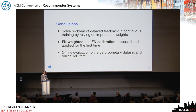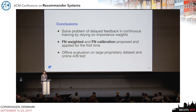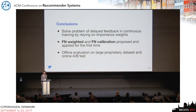To conclude, we solved the problem of delayed feedback in a continuous training framework by relying on importance sampling and importance weights. We proposed and applied for the first time fake-negative weighted loss and fake-negative calibration, which both rely on a simple solution from importance sampling. We evaluated these methods in an offline setting on a large proprietary dataset as well as a smaller public dataset, and performed online A-B tests.